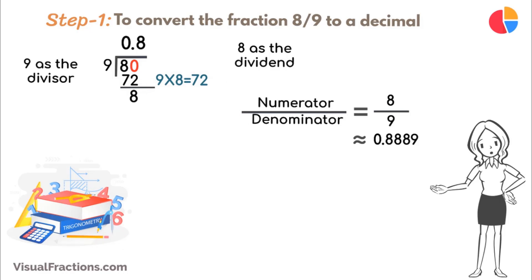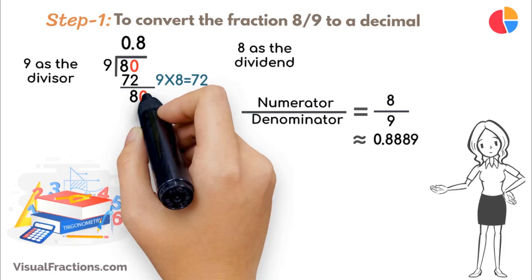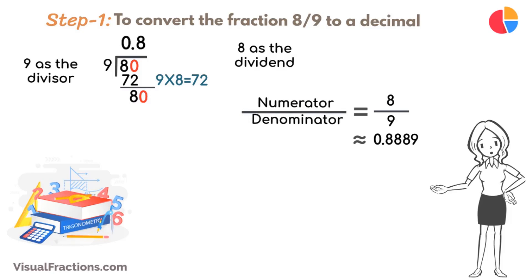Next, bring down another 0 to make it 80 again. 9 goes into 8 8 times, updating the quotient to 0.88. Multiply 9 by 8 to get 72, and subtract this from 80, leaving a remainder of 8.